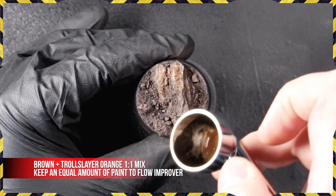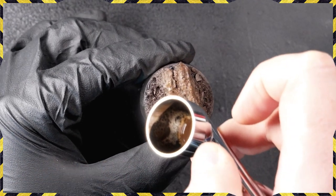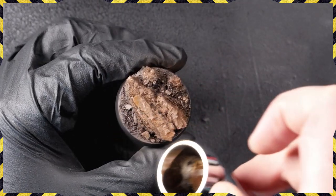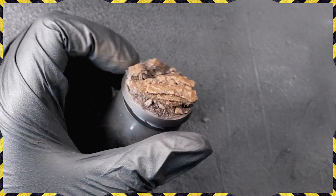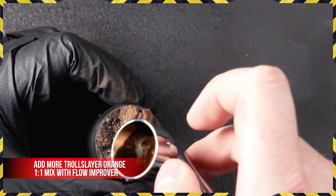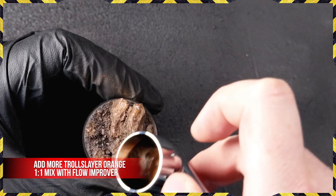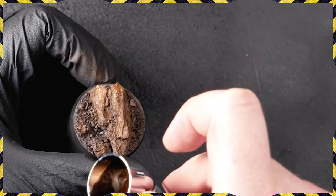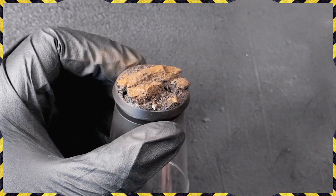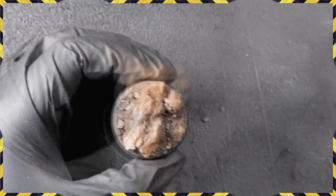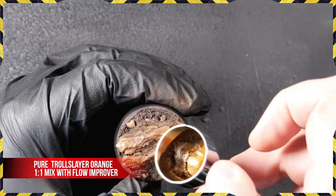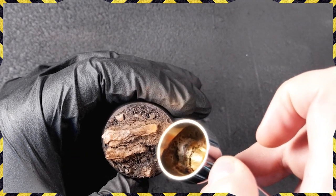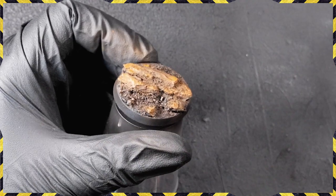Get the entirety of the base covered with that paint. Get a nice solid brown on there and start adding in some Troll Slayer Orange. Regardless of how much paint goes in here, you want to make sure your paint to flow improver is one-to-one. If you're doing this with a brush, just start painting in small areas. Don't do full coverage. Add more Troll Slayer Orange. We're starting to build the warmth now in these rocks.